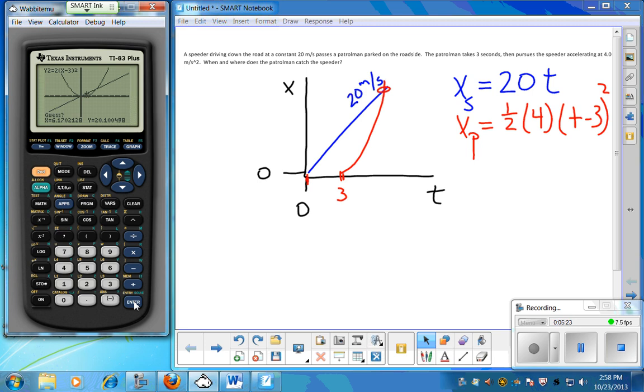The guess, however, is going to be more important now. Before we had two lines, they only intersect once. Now we've got a curve and a line. There are two intersections. So when it says guess, you want to move your cursor so that it is closer to and maybe even past that second intersection so that it finds that intersection first. It's only going to give you one solution at a time. You want the solution that makes physical sense, not the one that happened before the cop even started moving. So arrow on over on the guess and then hit enter.